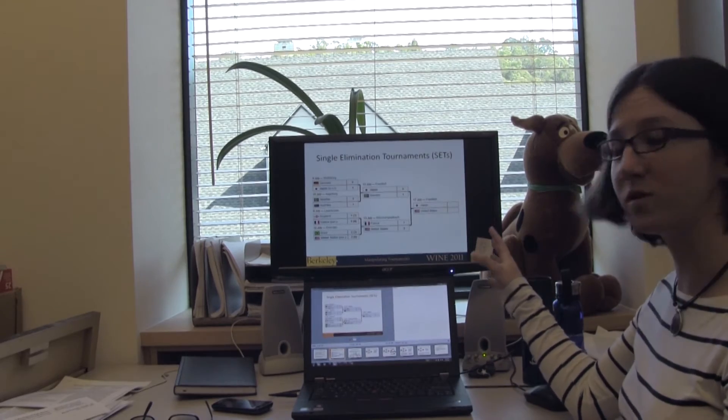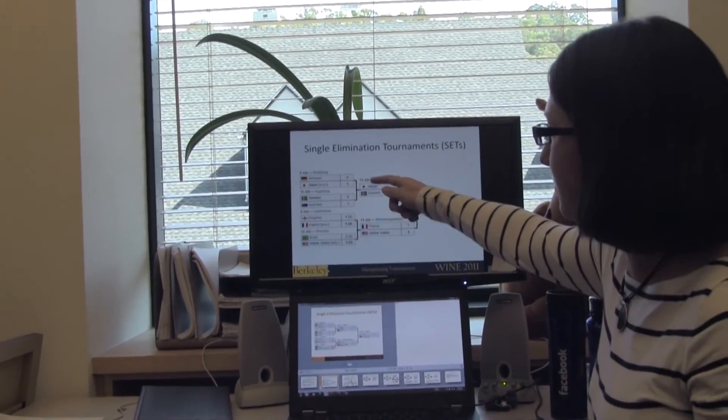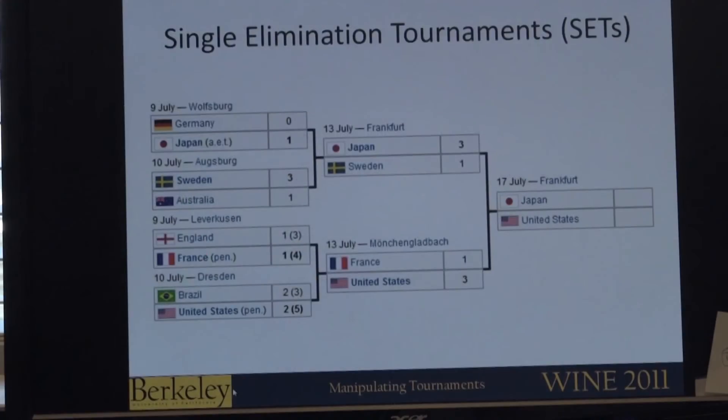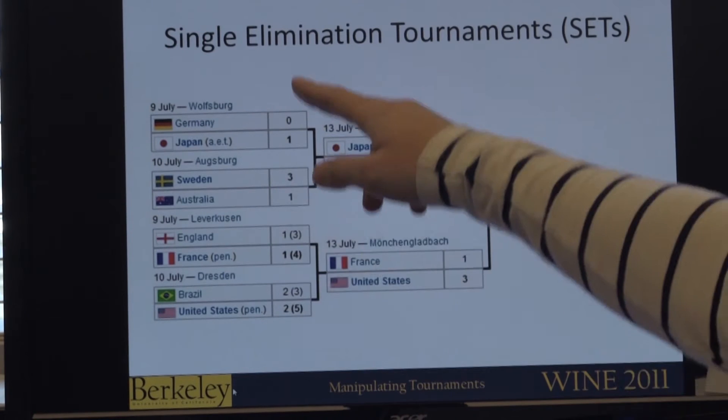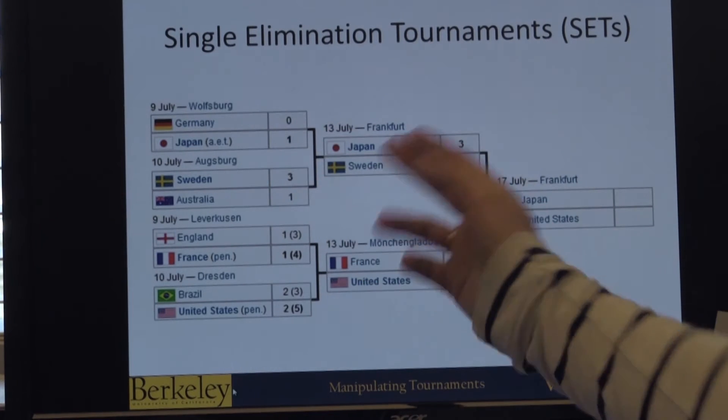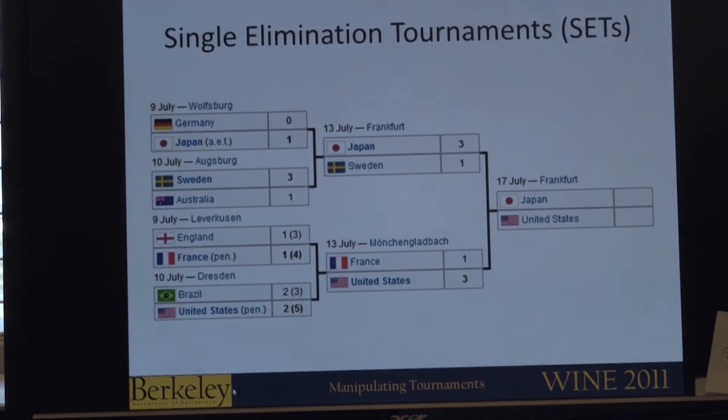For example, I can show you over here on the computer. So here on this slide we have actually the Women's World Cup, and the seeding is this picking of Germany versus Japan, Sweden versus Australia. And if I wanted something else to happen, maybe I could have picked a different initial seeding here, like maybe I have Sweden play England and that would end up with a different result out of the tournament.